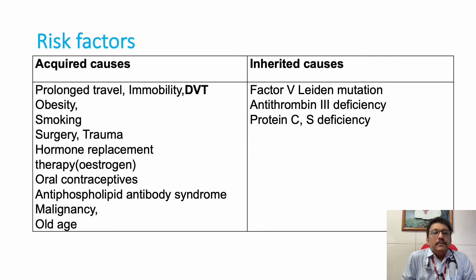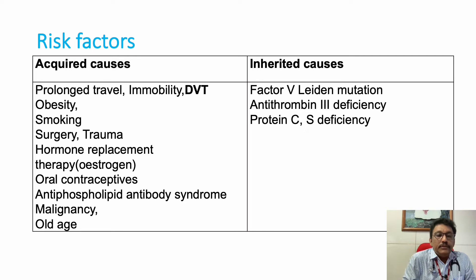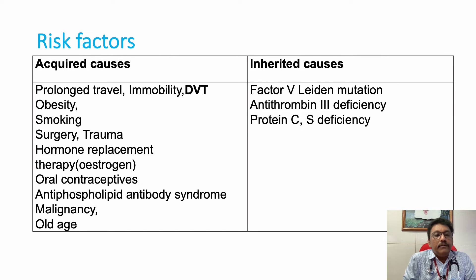The major acquired risk factors are prolonged travel and immobility, which can lead to DVT and then pulmonary embolism. Other risk factors include obesity, smoking, post-surgical and post-trauma periods when the patient is bedridden. Hormone replacement therapy, oral contraceptives, antiphospholipid antibody syndrome (acquired or congenital), malignancies, and old age are also important acquired risk factors.